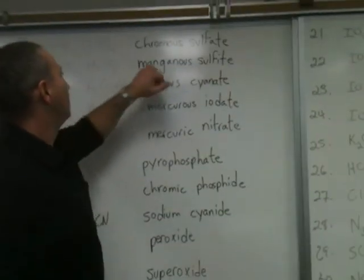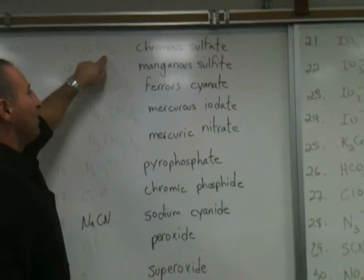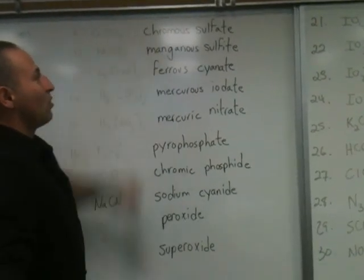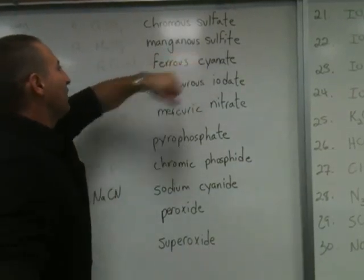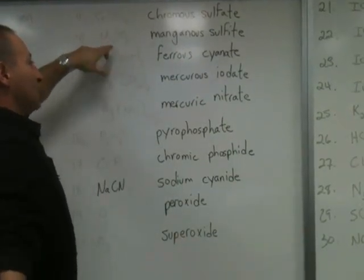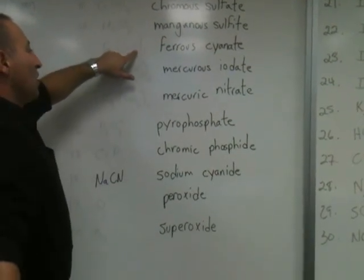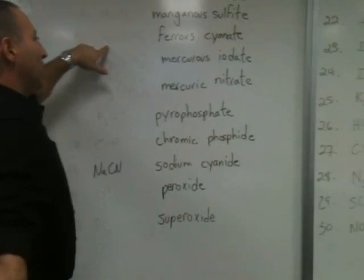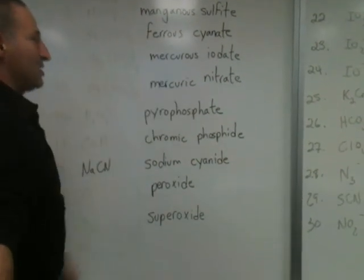Then we have sulfate combined with chromium. Sulfate is negative two, therefore chromium has to be plus two — that's the lower of the two possibilities, so it's chromous sulfate. Likewise, manganese sulfite — sulfite is minus two, therefore the manganese has to be plus two. This is cyanate with a minus one charge; there are two cyanate anions, therefore the iron has to be plus two, so it's the lower of the two possibilities — ferrous cyanate.